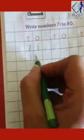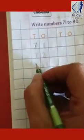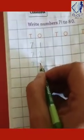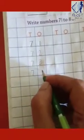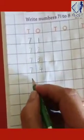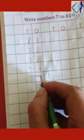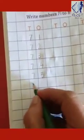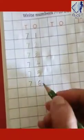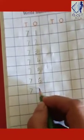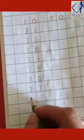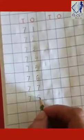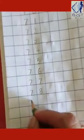7-2, 72. 7-3, 73. 7-4, 74. 7-5, 75. 7-6, 76. 7-7, 77. 7-8, 78. 7-9, 79. And last, 8-0, 80.